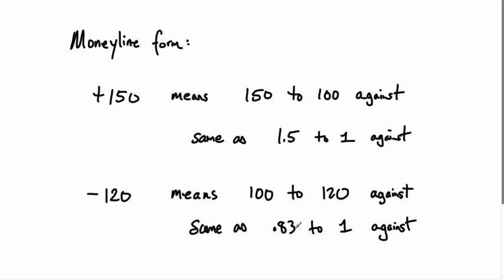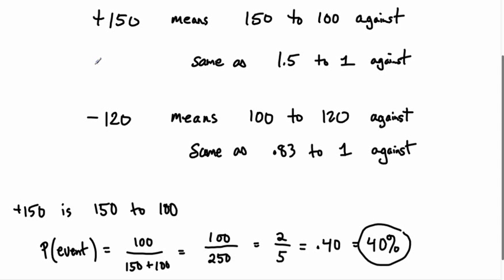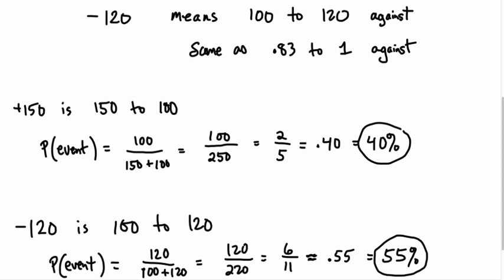The plus sign indicates an underdog, the minus sign indicates a favorite. For example, plus one fifty is one fifty to one hundred odds against — there are one hundred ways the team wins and one fifty they don't. So one hundred over two fifty equals two over five, which is 0.4 — a forty percent chance of winning. A minus one twenty means the team is a favorite. One hundred to one twenty against means one twenty ways they win out of two twenty total. One twenty over two twenty equals six over eleven, approximately 0.55 — a fifty-five percent chance of winning.